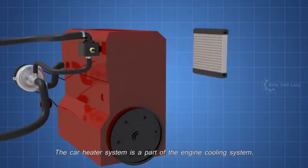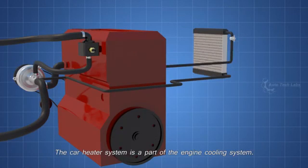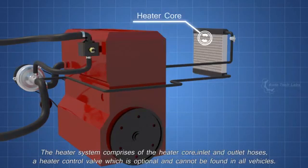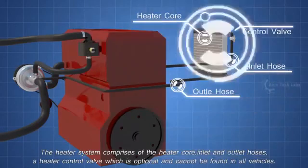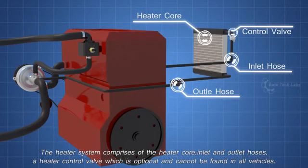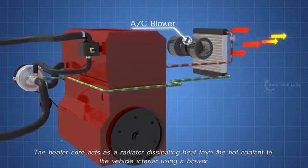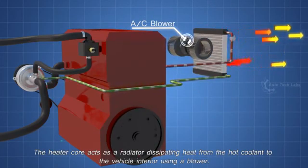The car heater system is a part of the engine cooling system. The heater system comprises of the heater core, inlet and outlet hoses, a heater control valve which is optional and cannot be found in all vehicles. The heater core acts as a radiator, dissipating heat from the hot coolant to the vehicle interior using a blower.